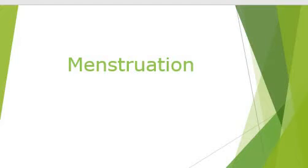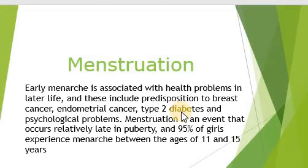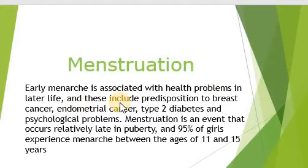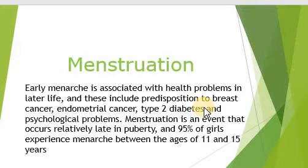This early onset of menses is basically due to the pulsatile release of gonadotropin hormone before the expected age. Early menarche is not a good condition. It may predispose the woman to certain types of disorders later in life. These may be cancer, diabetes, or some psychological events.